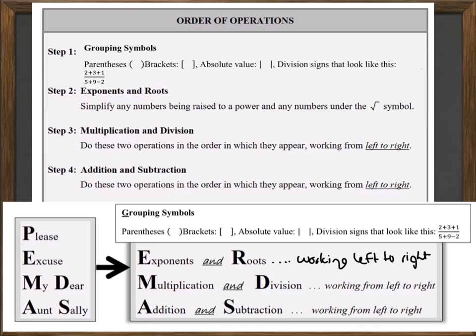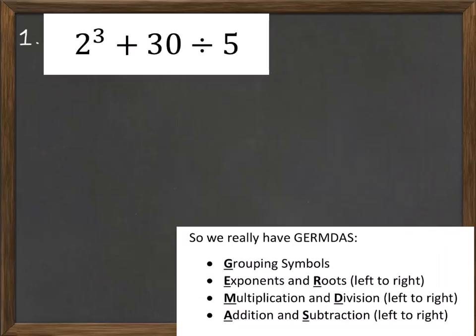So let's take all of these concepts and apply them to a bunch of problems. Number one says two to the third power plus 30 divided by five. Notice I have this new acronym — GERMDAS. So we have grouping symbols first. Let's look through our expression and see if there are any grouping symbols. I don't see any, so I'm going to move on, and I'll put a green check here to say that I have checked that off.